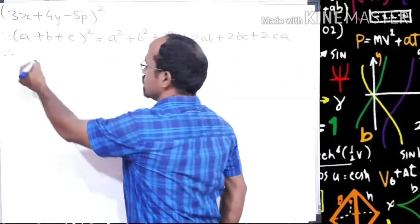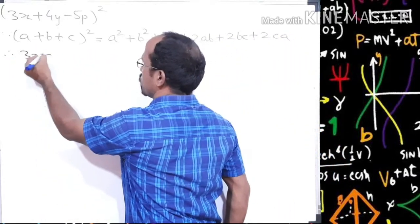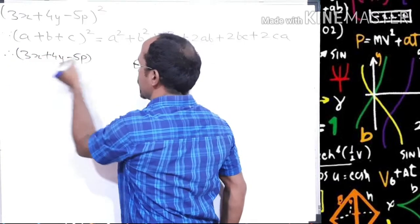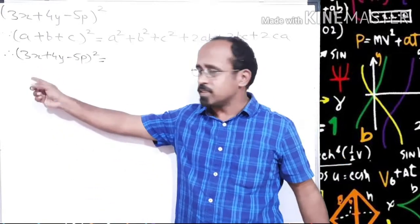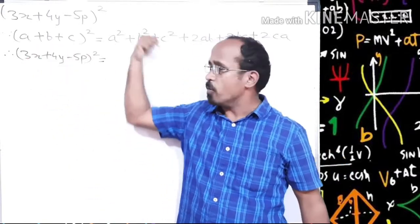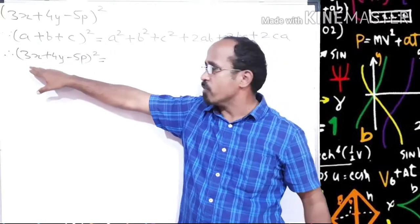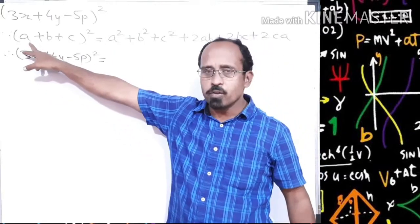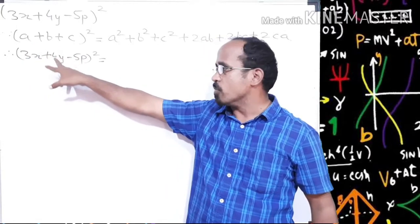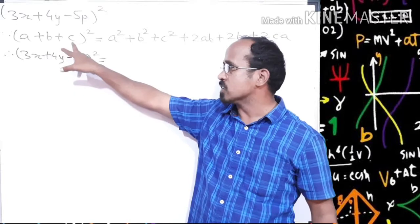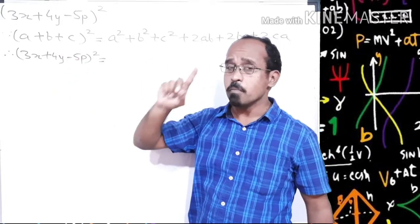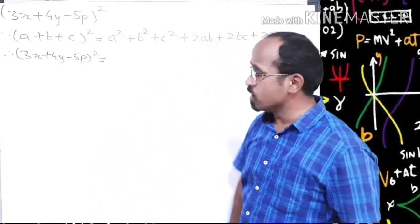So let's write the question: (3x + 4y − 5p)². By this approach it's easier to identify which term in the formula will be replaced by which term in the question. Simply: a in the formula will be replaced by 3x, b in the formula will be replaced by 4y, and c in the formula will be replaced by minus 5p.